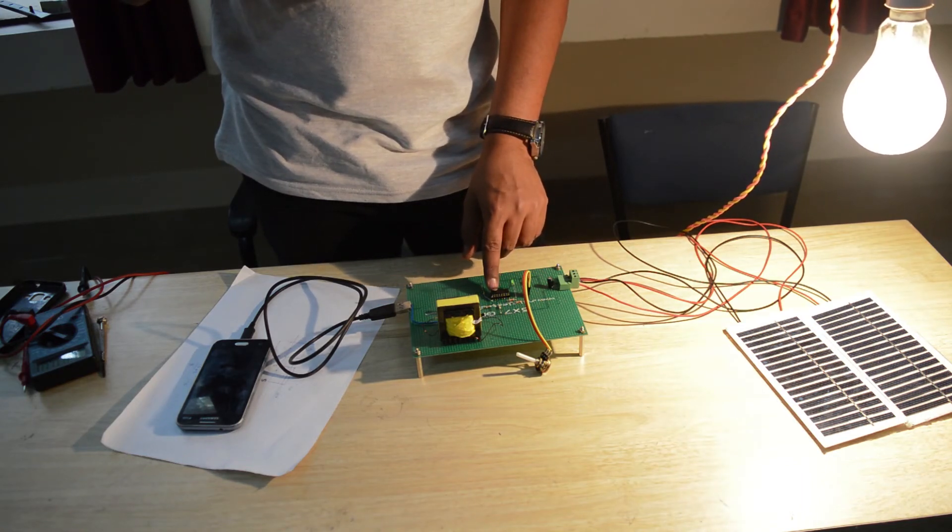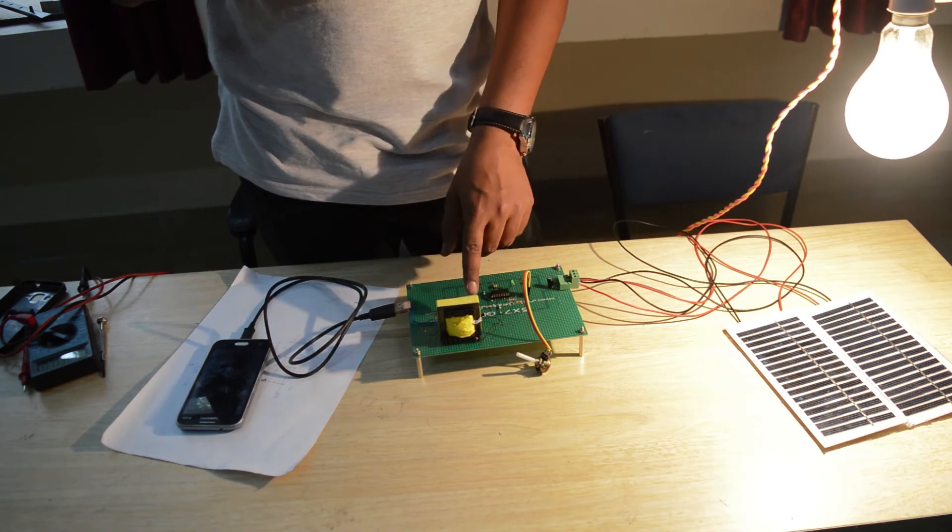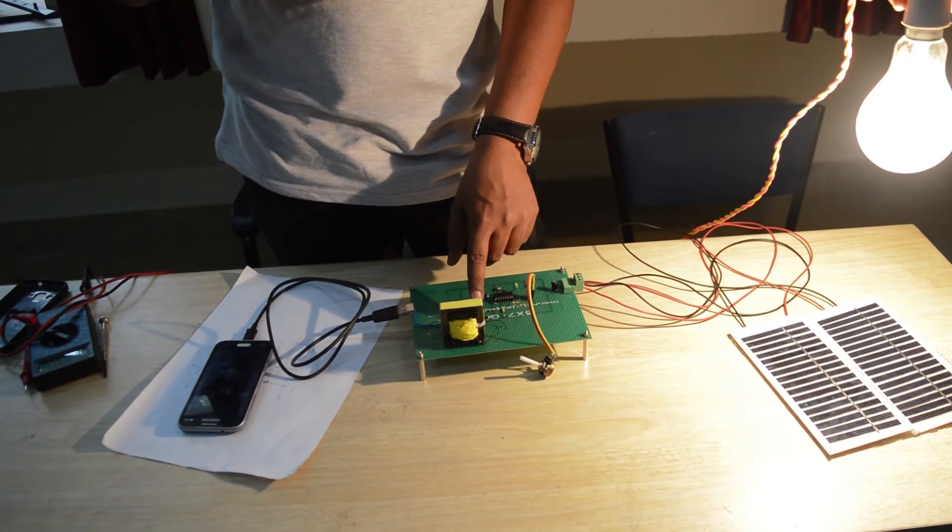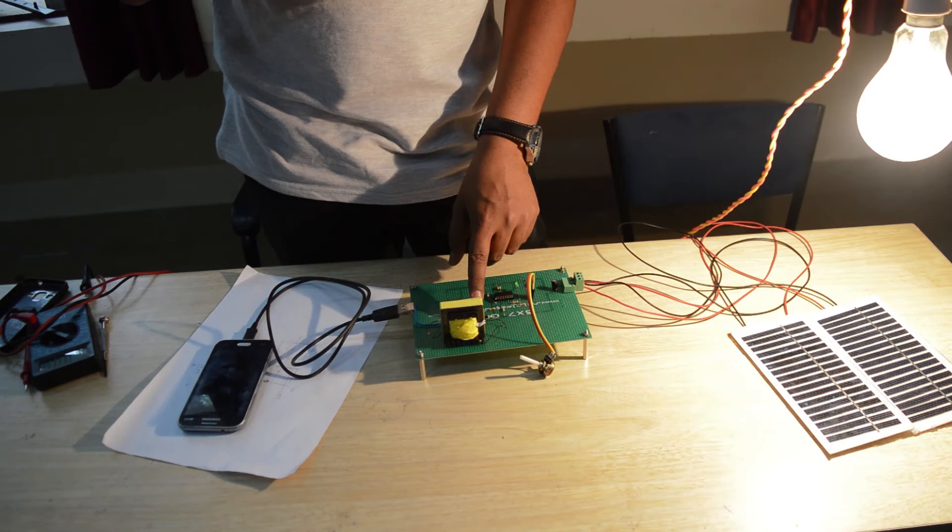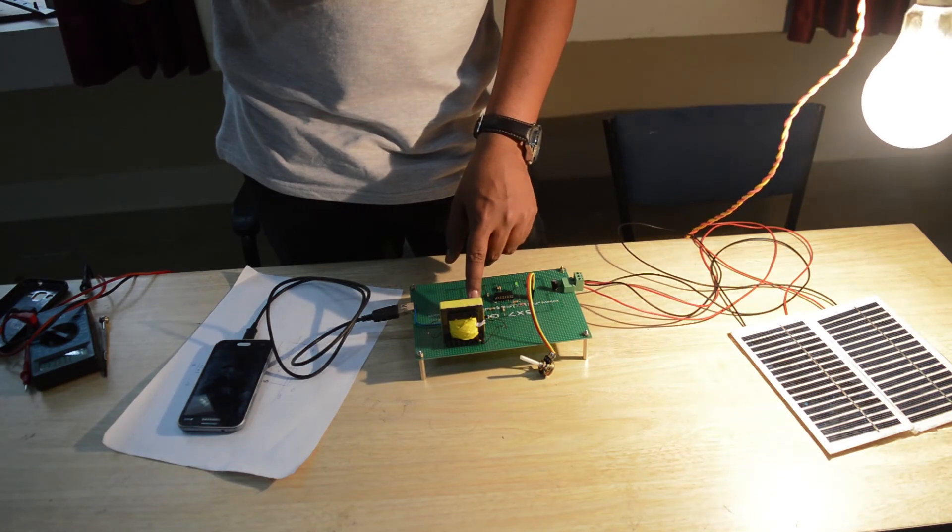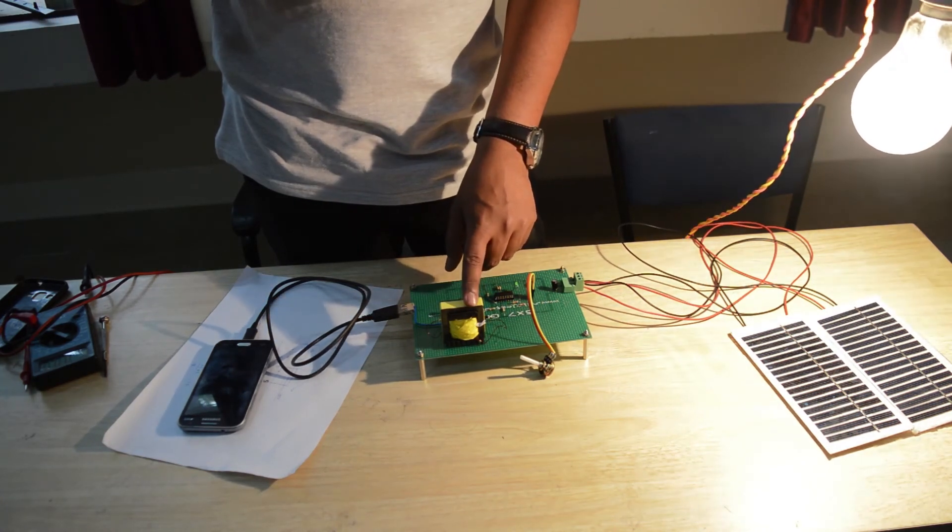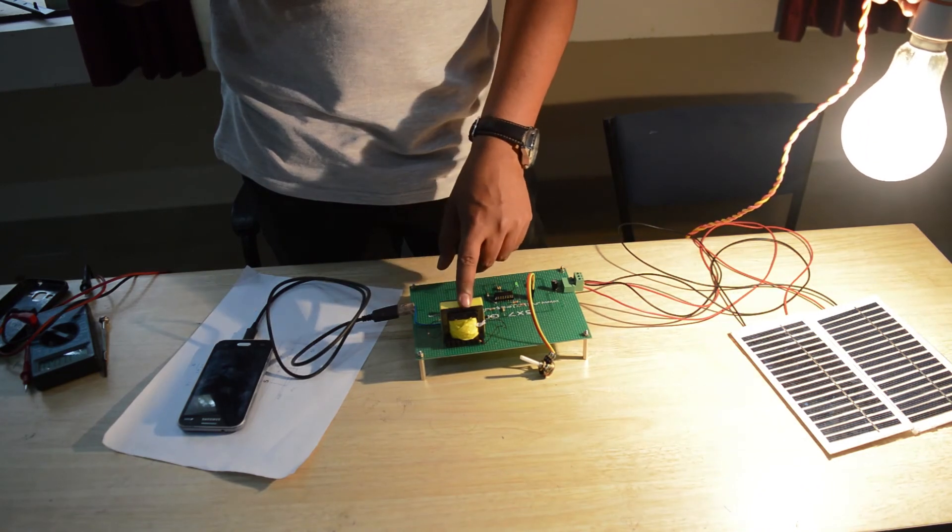We have a MOSFET switch which switches on and off depending on the current. Then we have a filter, an L and C filter.